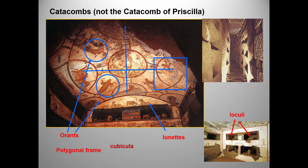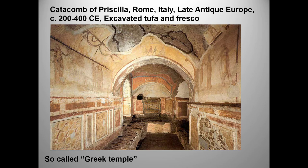An orant is a figure with both arms raised in prayer. A lunette refers to a semicircular space, often above a door or a window and often decorated with fresco painting or mosaics.